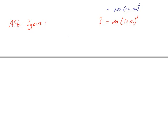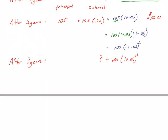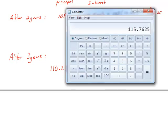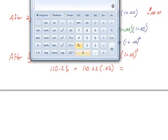So after three years, I'm starting at the beginning of that time period with $110.25. Again, that's my principal, and now I have to add my interest. So $110.25 earns 5% interest. I'm going to put that into my calculator and see what I get as a result.